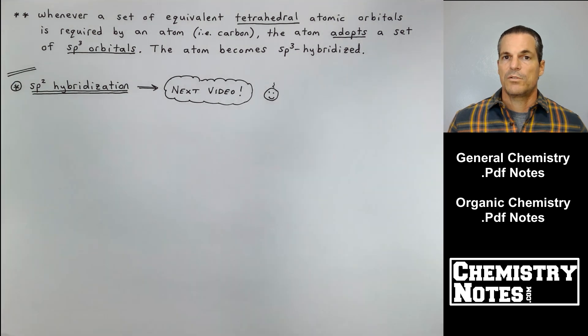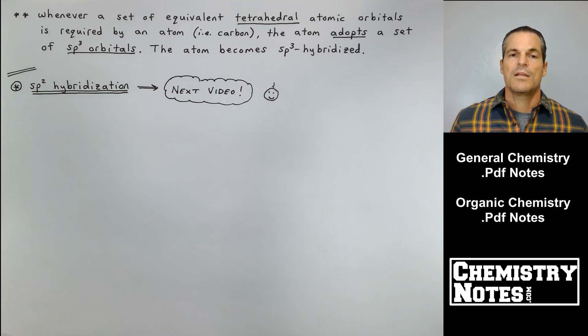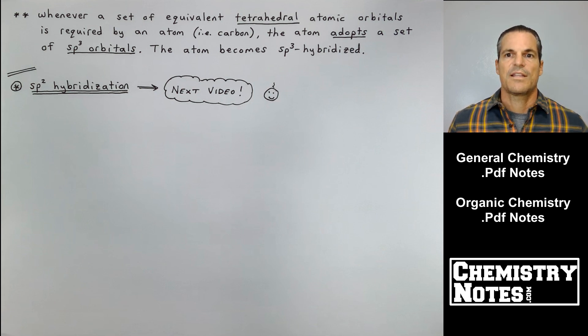In the next video, I'm going to talk about sp2 hybridization, sp hybridization, and then we'll do d2 sp3, dsp3, and then molecular orbital theory using sigma, sigma star and stuff like that. So that's it for this video. If you like the way I do these handwritten chemistry notes, you can find all my stuff at chemistrynotes.com. I've got organic chemistry notes and general chemistry notes all in one easy place, easy to download. So I'll see you for the next video.